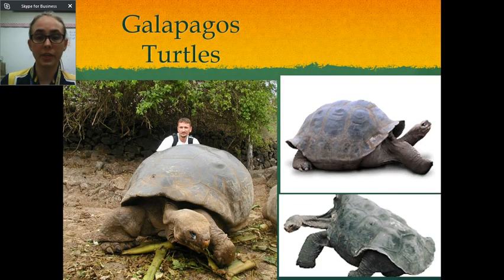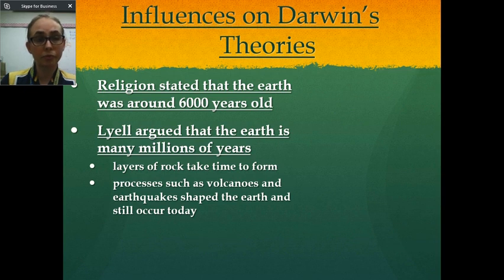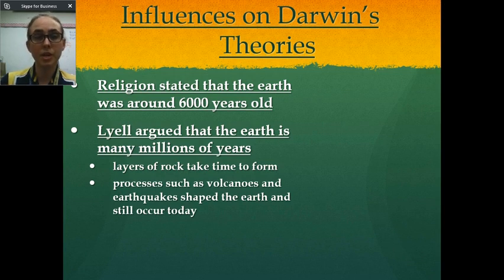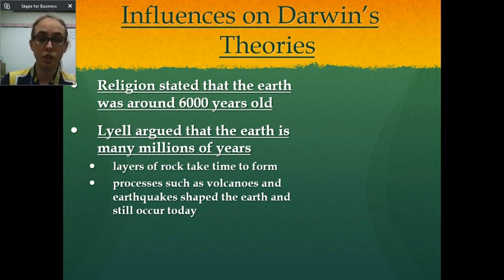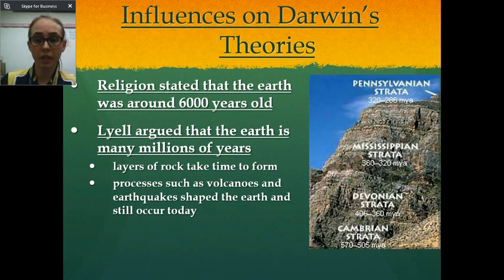Here are some pictures of some of the different tortoises on the Galapagos Islands — they're really huge. In the 1800s, when Darwin was developing his theory of evolution, religion stated that the earth was only around 6,000 years old. But a scientist named Lyell argued that the earth was actually many millions of years old, because the layers of rock take a lot of time to form. He also argued that processes such as volcanoes and earthquakes shape the earth and still occur today. This is a picture of different rock strata — the layers are oldest on the bottom, where you see the Cambrian strata, and the newer layers are on top.